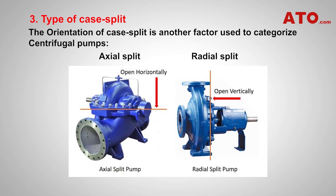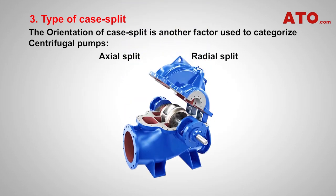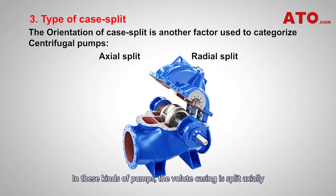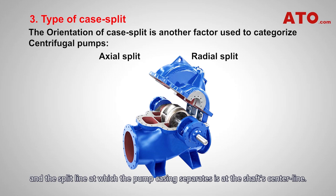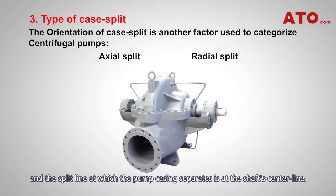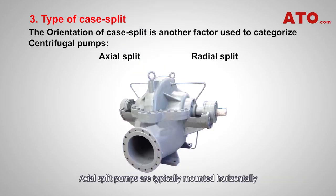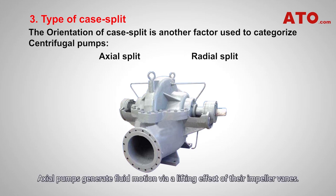The orientation of case split is another factor used to categorize centrifugal pumps. Axial split: in these kinds of pumps, the volute casing is split axially and the split line at which the pump casing separates is at the shaft center line. Axial split pumps are typically mounted horizontally due to ease of installation and maintenance. Axial pumps generate fluid motion via a lifting effect of their impeller vanes.